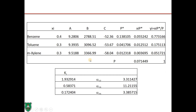We can also calculate the distribution coefficients Ki = Yi / Xi: for benzene Ki ≈ 1.9, toluene Ki ≈ 0.6, and xylene Ki ≈ 0.17.